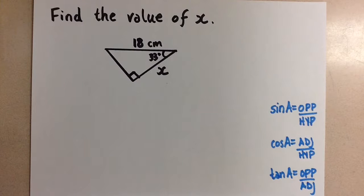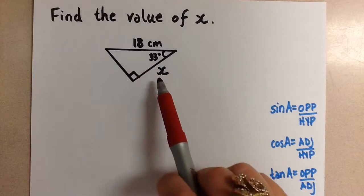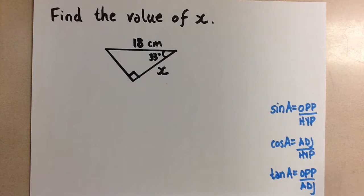So in this first example we have a right angle triangle and we have two sides and one angle there. That's the indicator that we're going to use the trig ratios to solve for the variable.